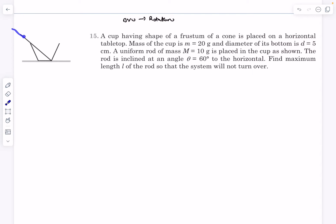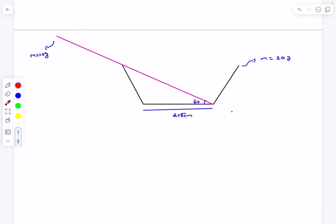We can see that if we keep increasing the length of the rod, there will come a point where the entire structure will rotate about the hinge point and turn over. So we have to figure out the limiting value of the length of the rod. This is the diagram of the situation.